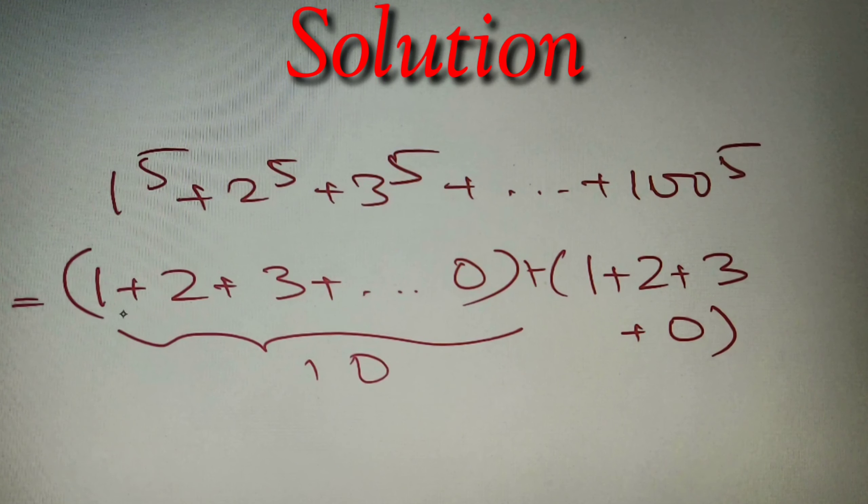We know that the sum of consecutive natural numbers from 1 to n is equal to n into n plus 1 by 2, where n is the number of terms. If we omit 0 in all the sets, then we can apply this formula.